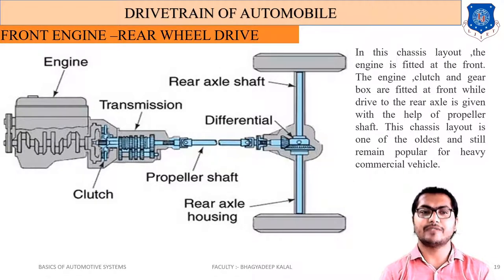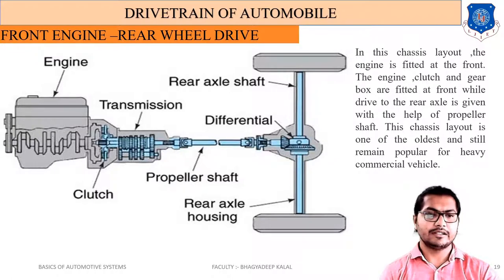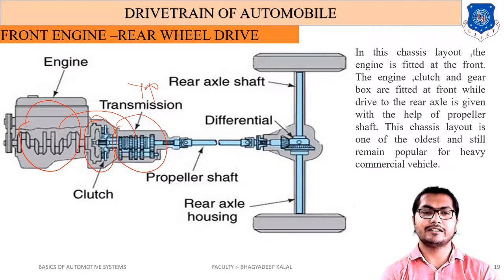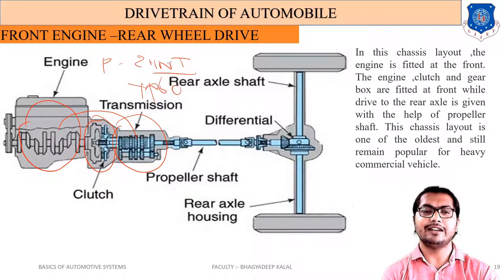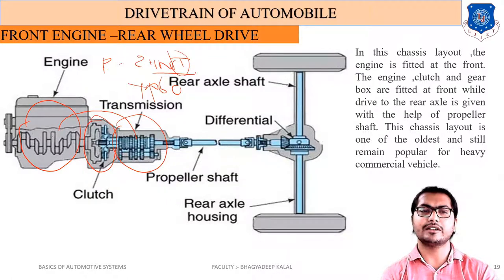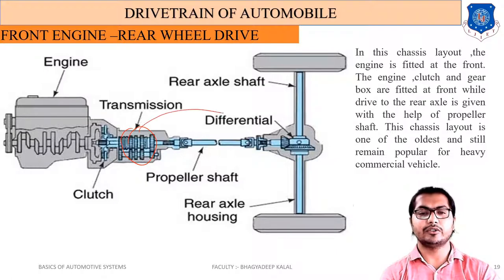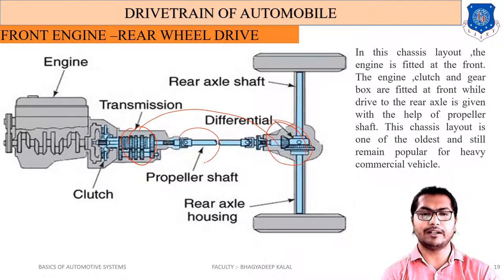In this drive, the engine produces power which is transmitted to the gearbox with the help of the clutch. In the gearbox, torque increases with decreasing speed, because power equals 2πNT/60 — if speed decreases, torque increases. From the gearbox, power is transmitted to the differential via the propeller shaft.